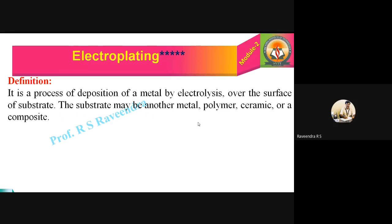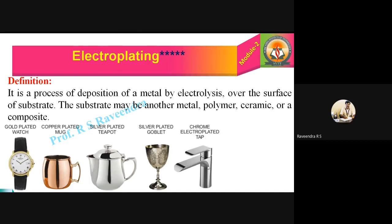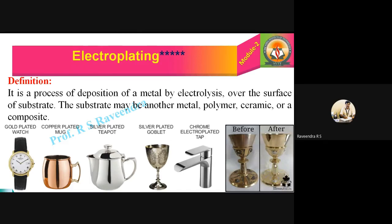See now: a gold plated watch, the frame of this watch is gold plated. A copper plated mug, a silver plated teapot, a silver plated goblet, and a chrome electroplated tap. You can see this cup here — before, it looked like this; after depositing copper or some other metals, see how it is looking. This is about electroplating. In the next video, I am going to explain the various principles which govern the electroplating. Thank you all.